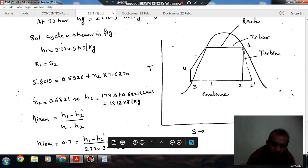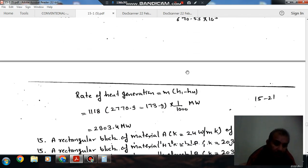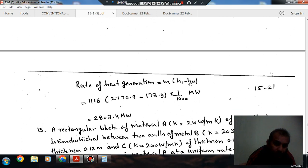Rate of heat generation is M times h1 minus h4. H1 minus h4 is the gain in specific energy. Putting the values of h1, h4, and mass, we can find out this rate of heat generation.